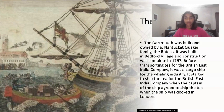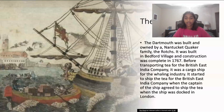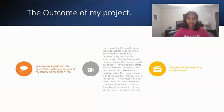The Dartmouth was built and owned by a Nantucket Quaker family, the Roths. It was built in Bedford Village. It began shipping tea for the British East India Company, and the captain agreed to dock the ship when it arrived in Boston.